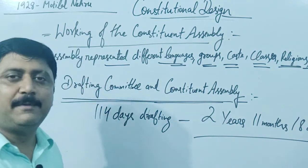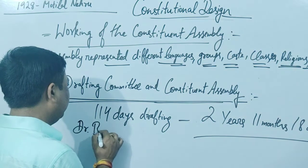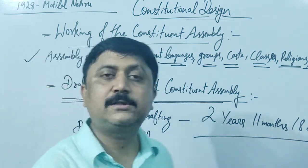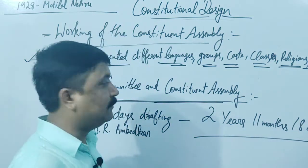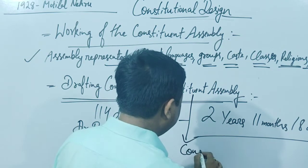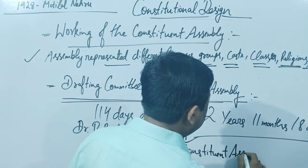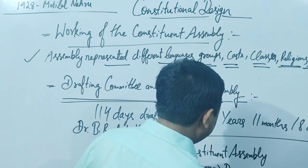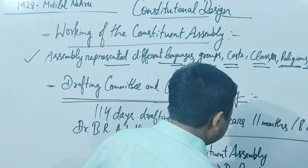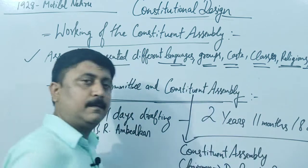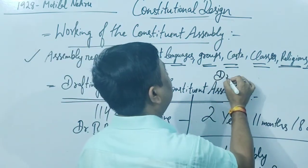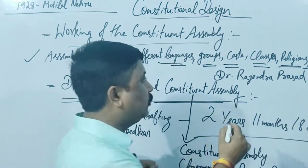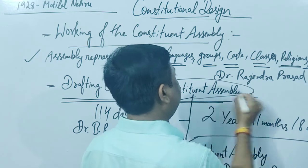Now, the drafting committee: as you already know, Dr. B.R. Ambedkar was the Chairman of the Drafting Committee. He was the chairman of the drafting committee — not the chairman of the Constituent Assembly. The chairman of the Constituent Assembly was Dr. Rajendra Prasad.